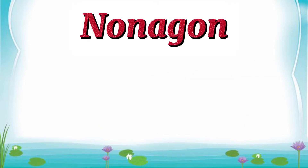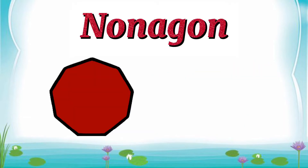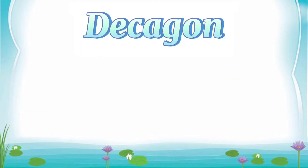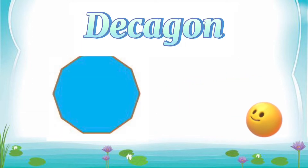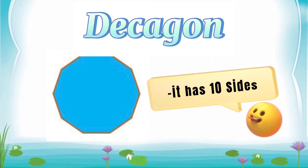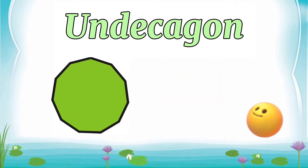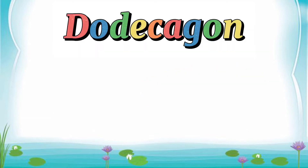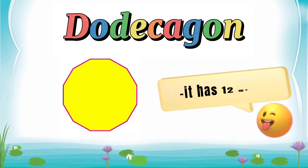Nonagon — it has nine sides. Decagon — it has ten sides. Undecagon — it has eleven sides. Dodecagon — it has twelve sides.